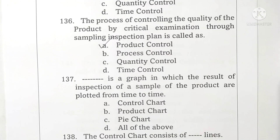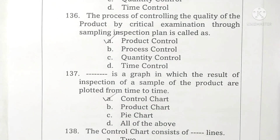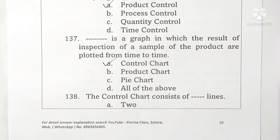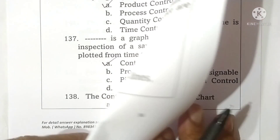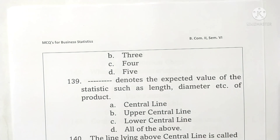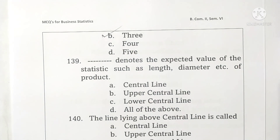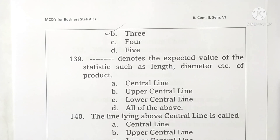Question 137: a control chart is a graph in which the results of inspection of a sample of the product are plotted from time to time. Option A is correct. Question 138: a control chart consists of three lines. Option B is correct.